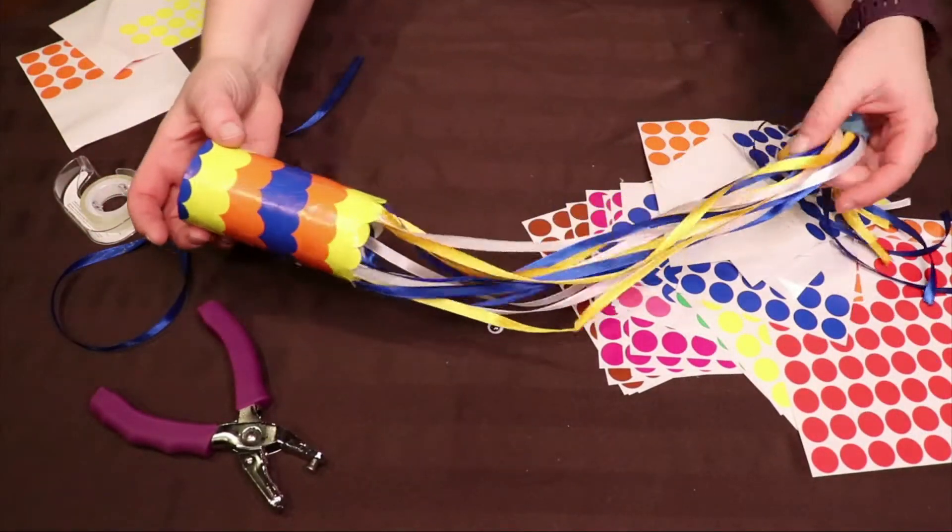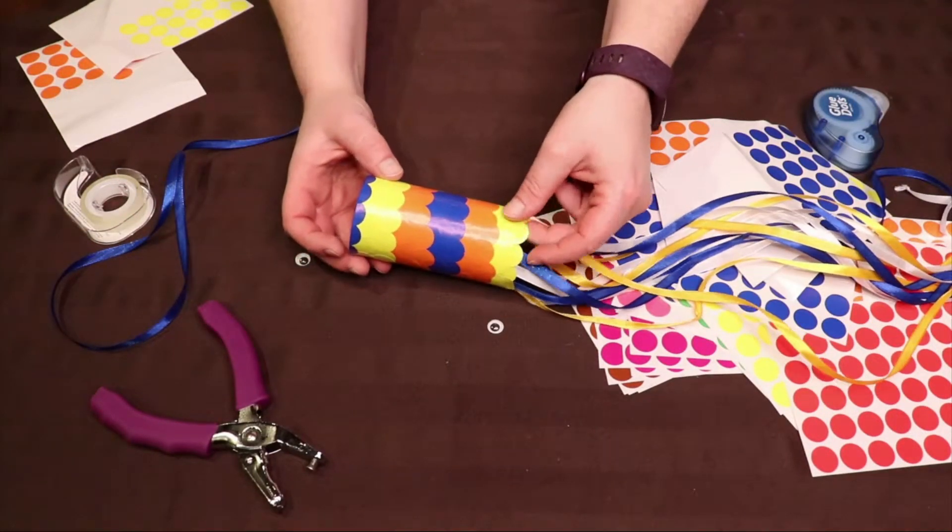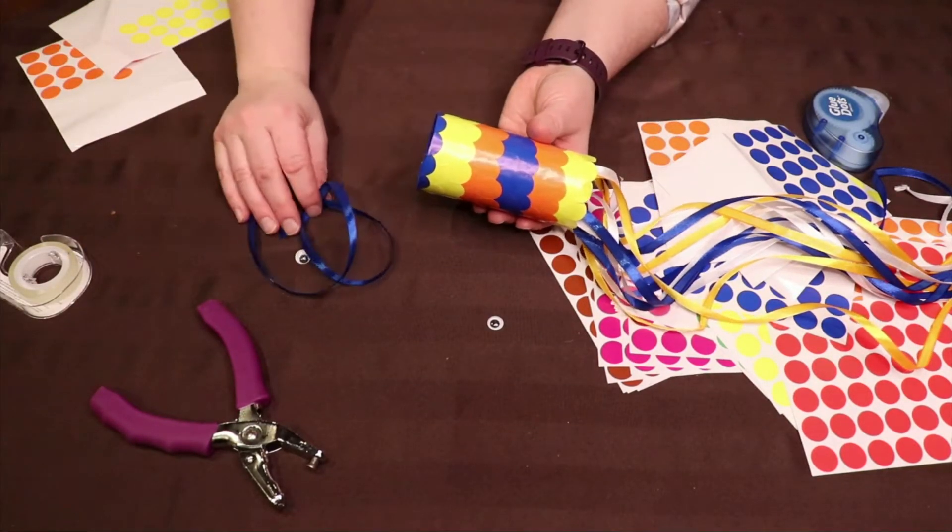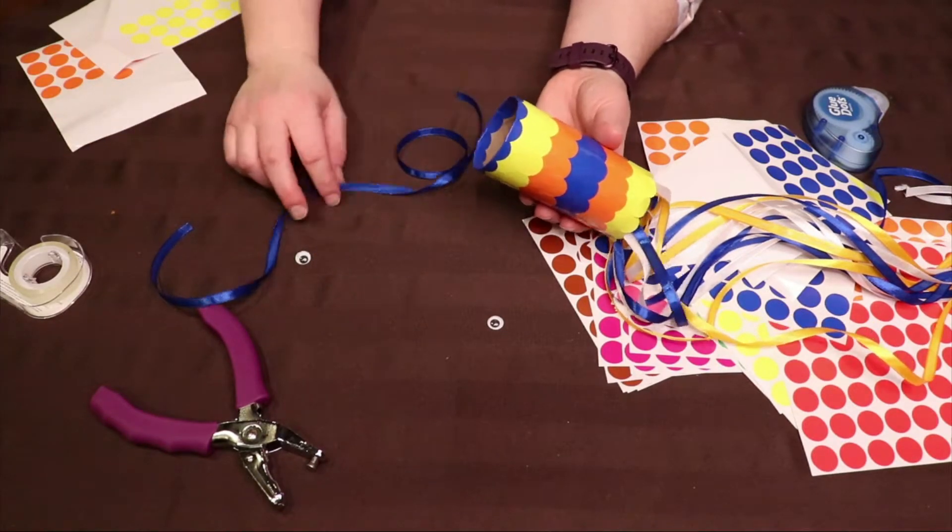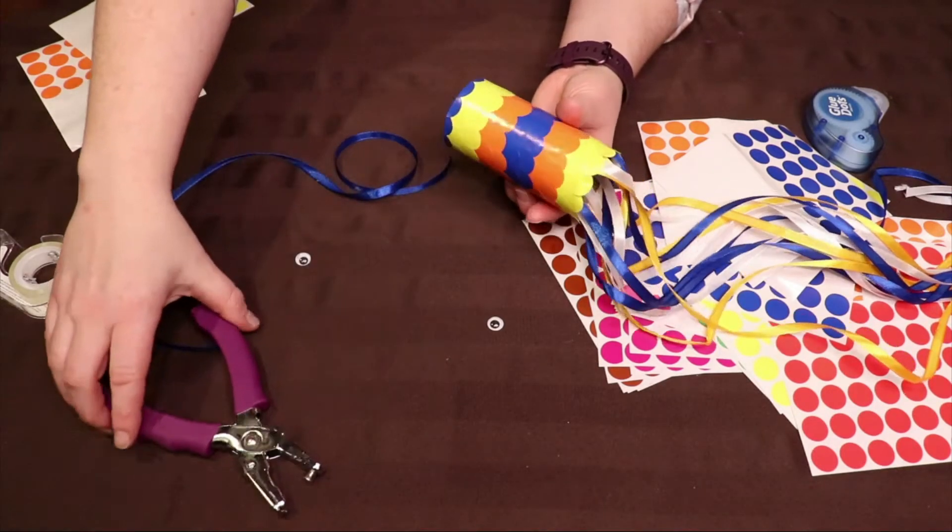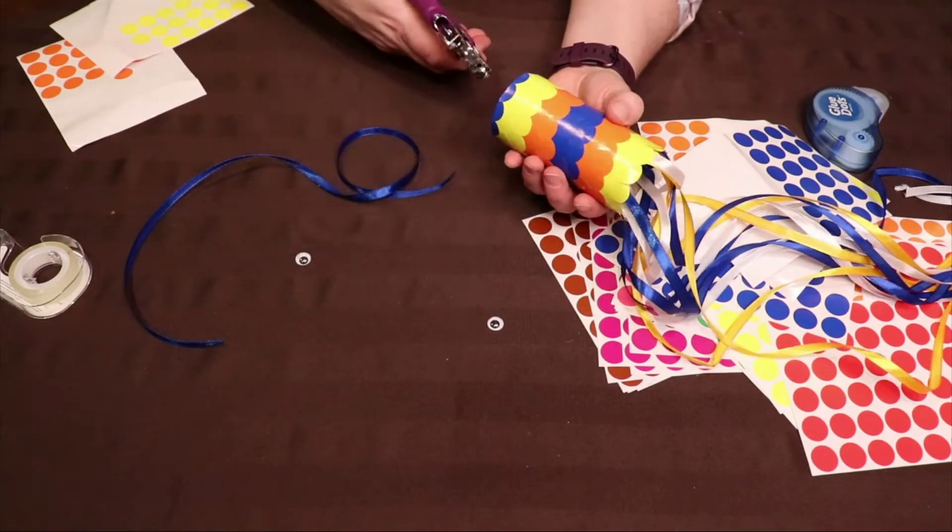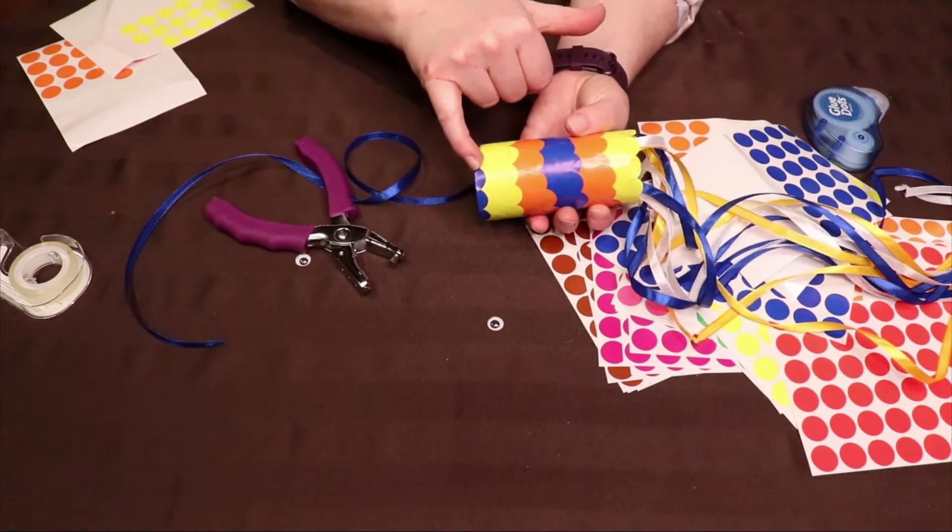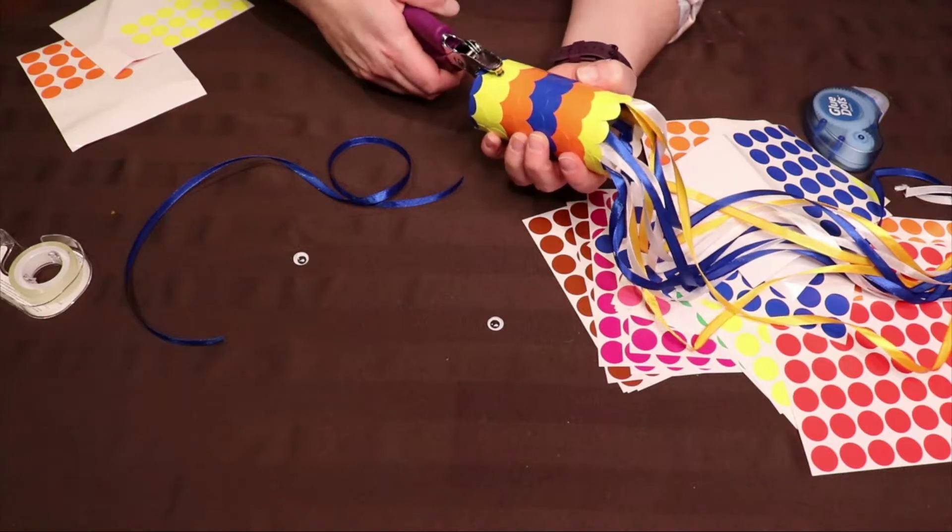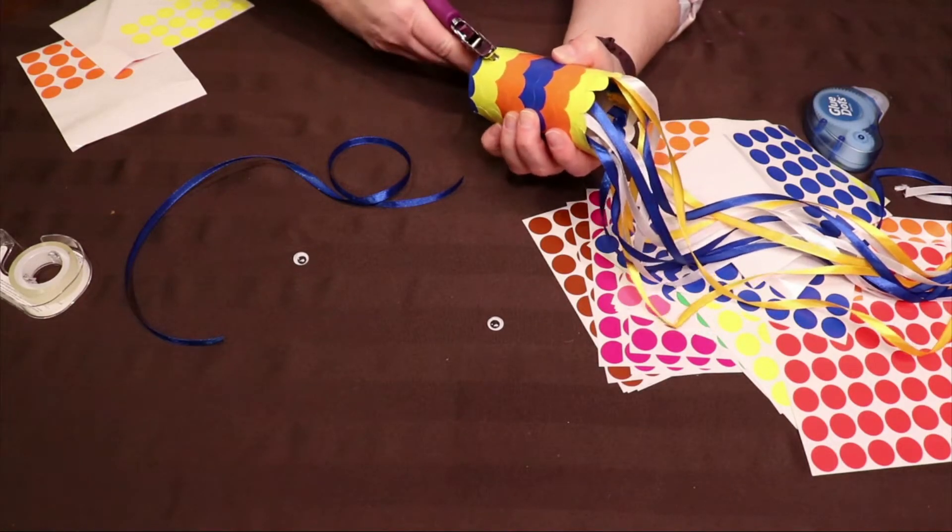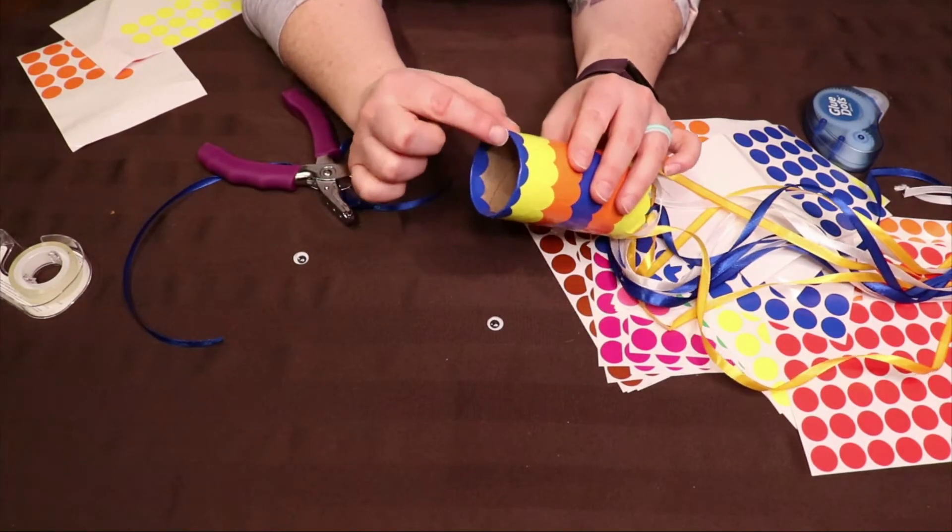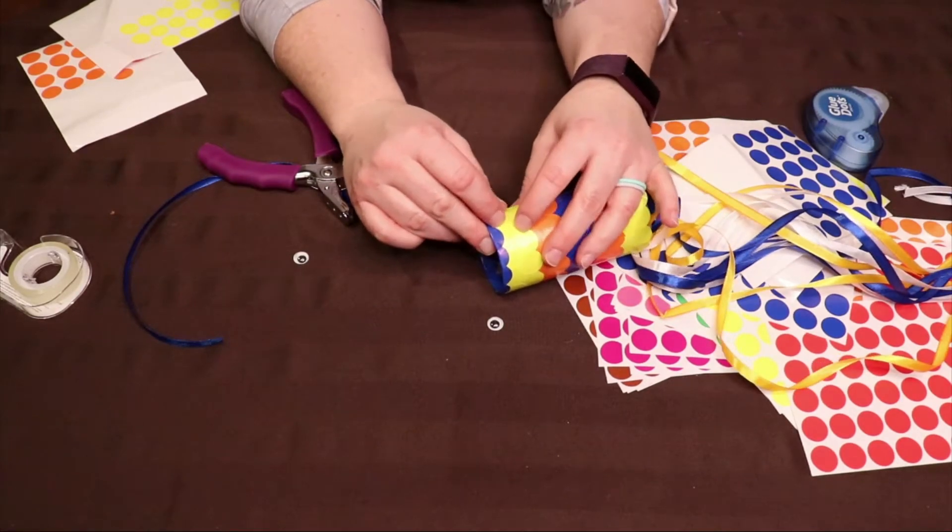Once you've finished attaching the ribbons to the bottom of your fish windsock, cut one more piece of ribbon. So we've got 12 here, this would be piece number 13, once again approximately 30 to 40 centimeters in length. This will be how we hang it up. I'm going to use my single hole punch and punch two holes, not too close to the edge so it doesn't rip off, but maybe about a centimeter in or so. And directly across the toilet paper roll on the other side, I'll punch another hole.